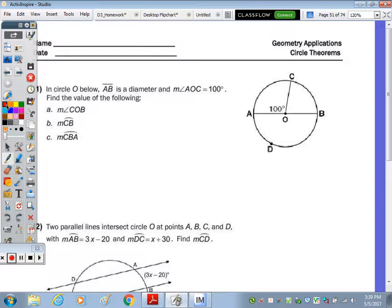So this warm-up actually reviews some of the circle theorems. In number one, it says we have circle O below, but it's not actually below. AB is our diameter. So remember, the diameter divides a circle into two arcs that are each 180 degrees. So this is 180 degrees, and this is 180 degrees total.